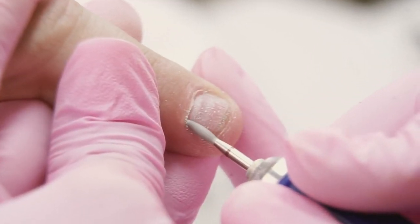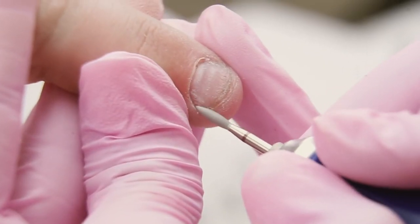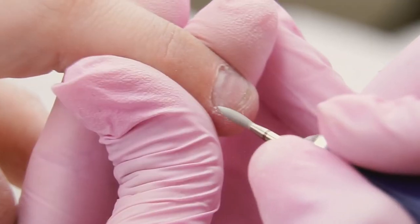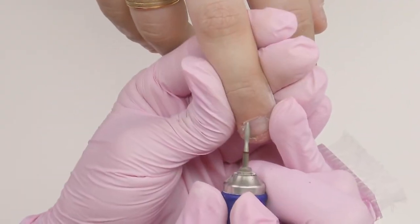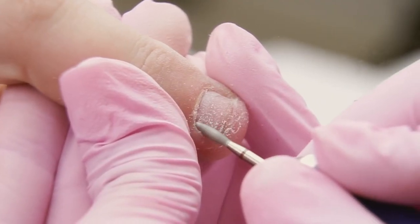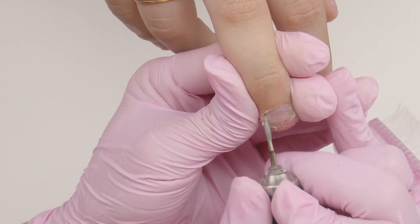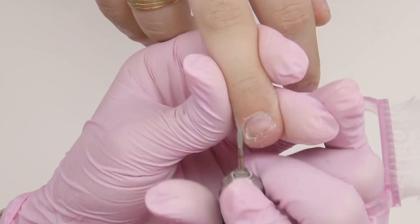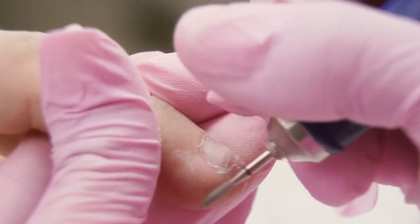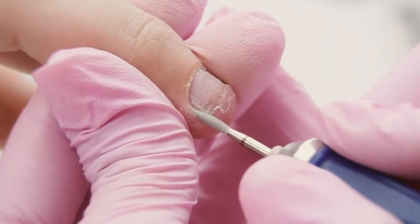For removing pterygium, I chose a red flame drill bit because the skin is sensitive. And if I go with the blue one, there is a good chance to injure. I set the speed to about 15 to 17 thousand revolutions. It will depend on the power of your e-file. Forward position, I remove the left side of the cuticle, sinus and lateral fold. I'm using a tip of the drill.